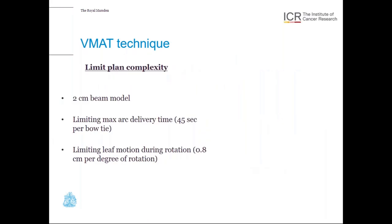Our bowtie VMAT technique aims to limit plan complexity to make aperture shapes and overall delivery as simple as possible. We use a modification of our beam model where MLC leaf pairs must be at least two centimeters apart from each other. We also limit the maximum delivery time of each partial arc to 45 seconds. This has two effects: each partial arc should be deliverable within three breath holds, giving six breath holds total for two arcs — similar to a tangent plus SCF plus post-axilla delivery. Limiting delivery time also limits the optimizer's opportunity to move MLC leaves, making apertures less complex.